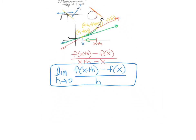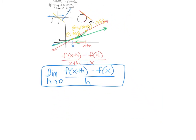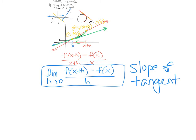Taking the limit as h → 0 of [f(x + h) − f(x)] / h gives us the slope of the tangent line. That's the formula we'll use every single time to find the slope of a tangent line.